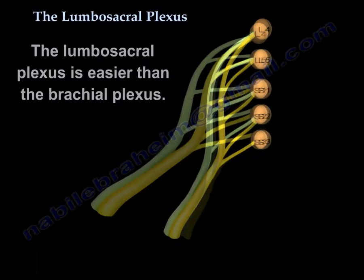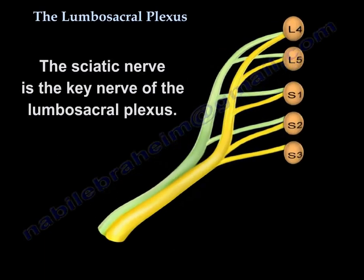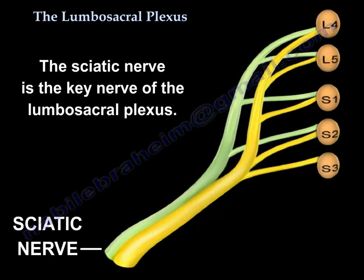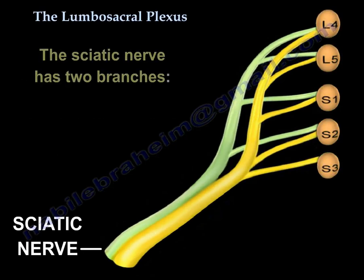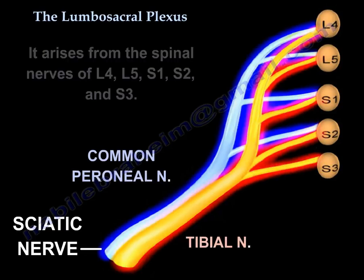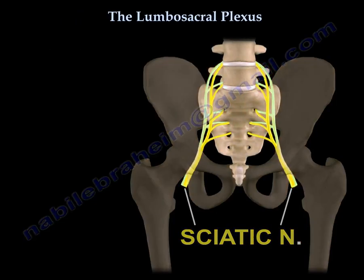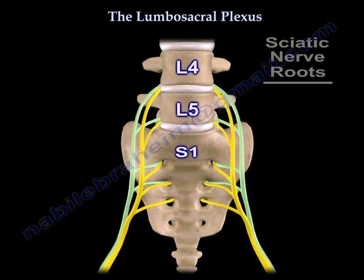The lumbosacral plexus is easier than the brachial plexus. The sciatic nerve is the key nerve of the lumbosacral plexus. The sciatic nerve has two branches: the common peroneal nerve and the tibial nerve. The sciatic nerve arises from the spinal nerves of L4, L5, S1, S2, and S3 — basically from L4 through S3.